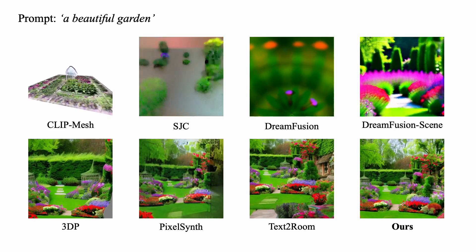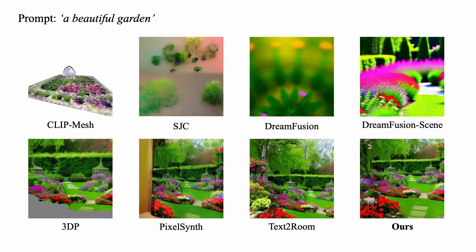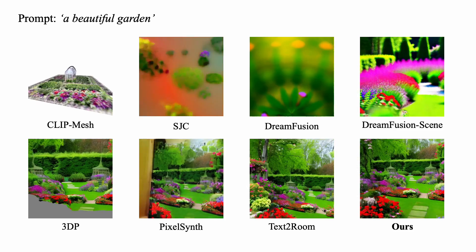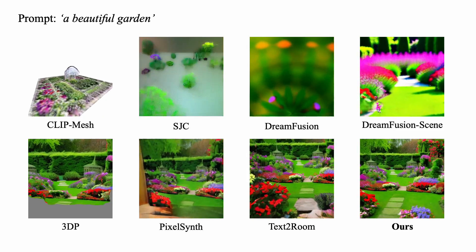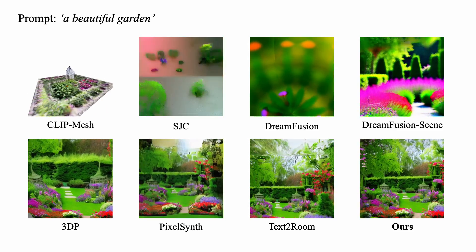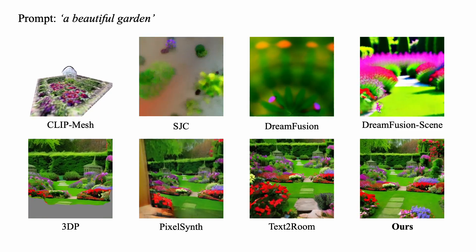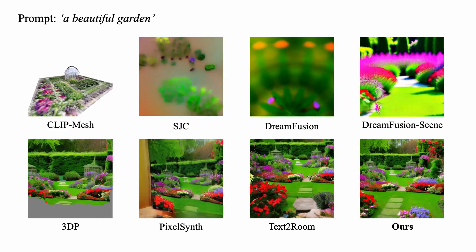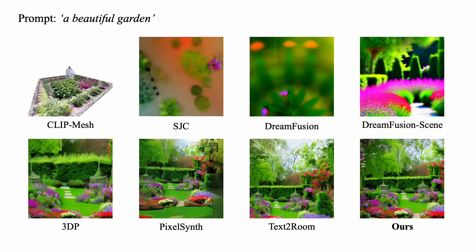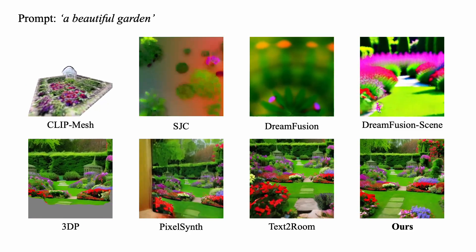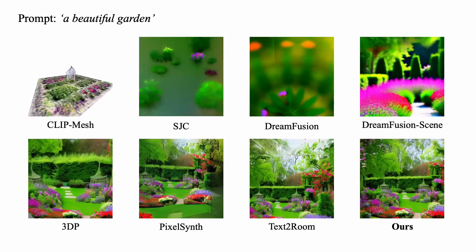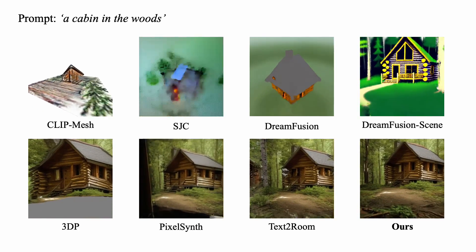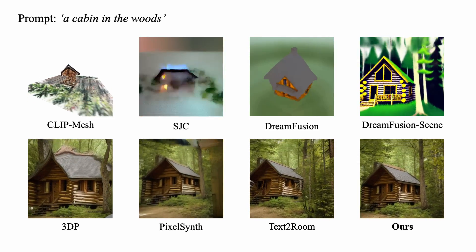Since ClipMesh, SJC, and DreamFusion are designed for simple 3D object generation, they fail to generate complex 3D scenes related to the given prompts. In contrast, the modified DreamFusionScene successfully generates text-related 3D scenes with more complex geometry, but it cannot produce detailed structures and photo-realistic textures since the deep semantic priors provided by the text-image method cannot constrain low-level details.